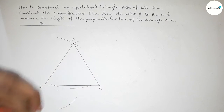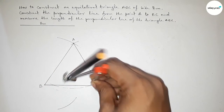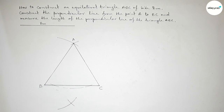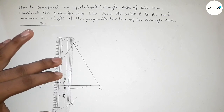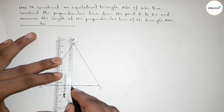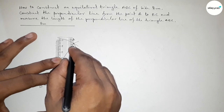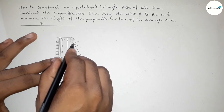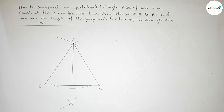Drawing an arc here, then putting the compass on the other point with the same length and cutting here, so both curves intersect at a point. Now joining this perpendicular line, which meets the line BC at a point.